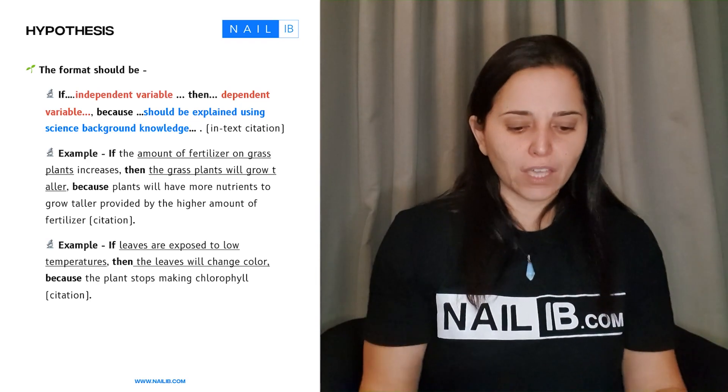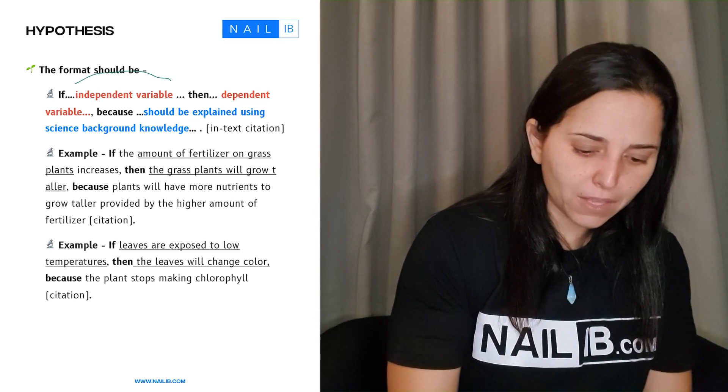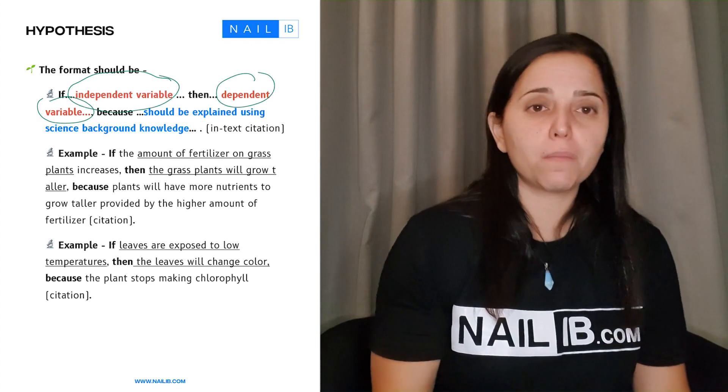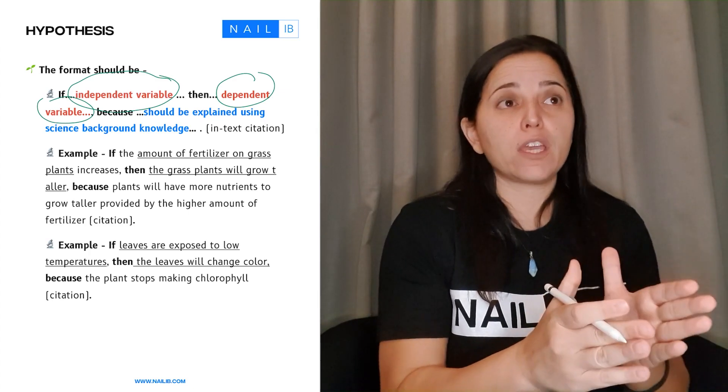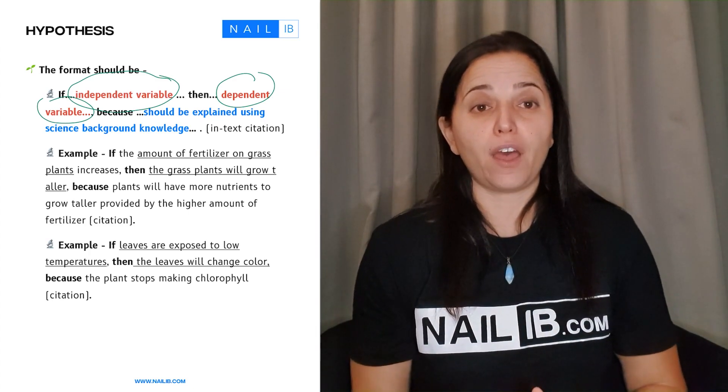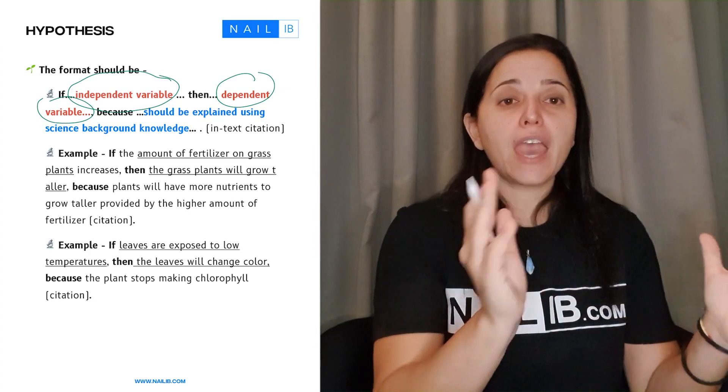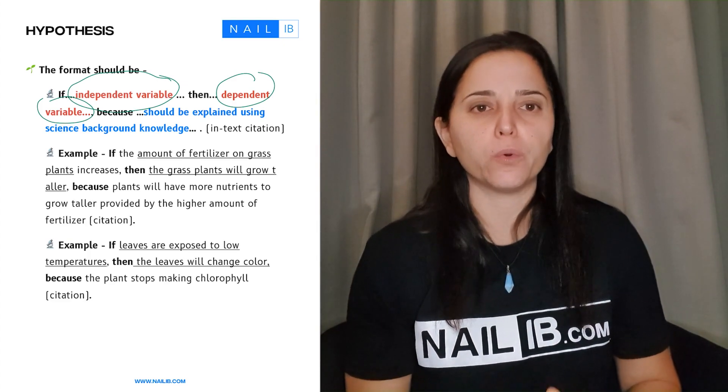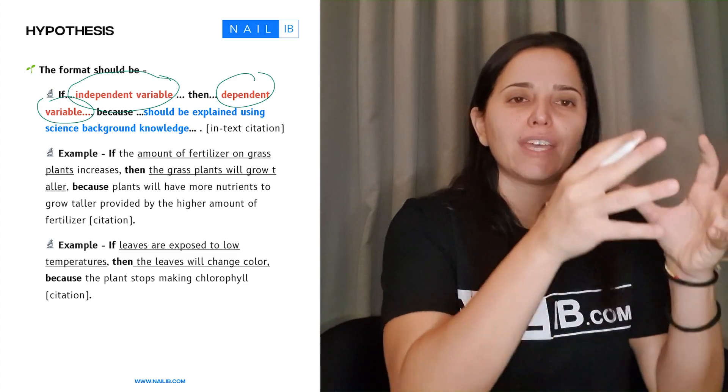So the if, you will have the independent variable, and then after the then, you put the dependent variable. So if the temperature increases, then the rate of enzymes will go faster. If the pH is increased, then the flower will change color to a blue. So it's if independent, then the dependent. That's how you write hypothesis.